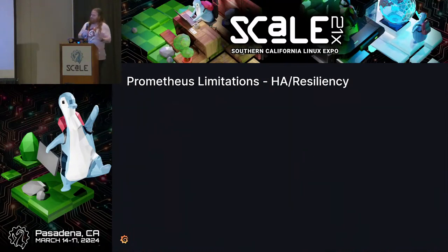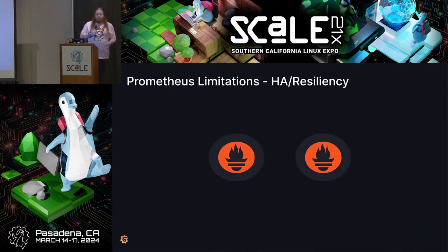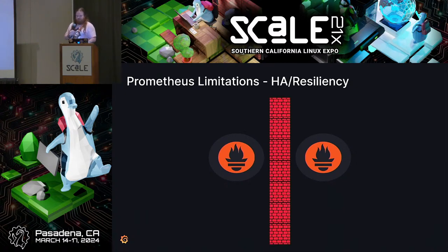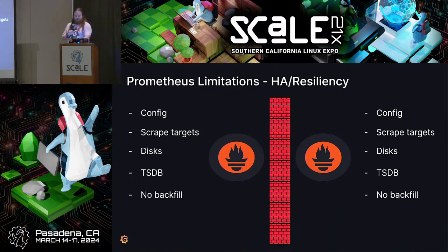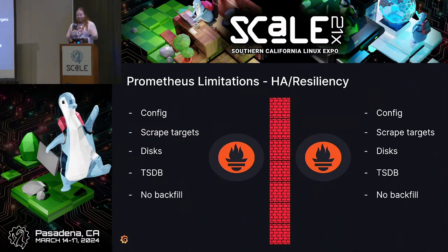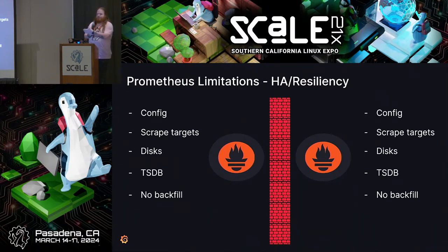The next limitation is around HA and resiliency. You might have two Prometheus servers running as a HA pair, but as I mentioned, they run totally independently — they don't know they're in a cluster. There's a brick wall between them; they have their own configs, their own scrape targets, separate disks, and separate TSDBs. There's no automatic syncing of data. If you take one down to upgrade it, it's missing data while it was down, and when it comes back up, the other one doesn't fill it in. So that's something you have to manage yourself.